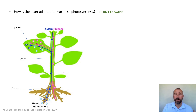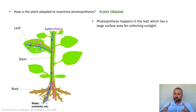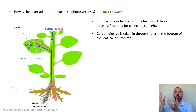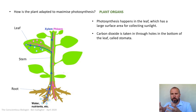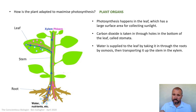Each of these three organs has a vital role in photosynthesis. Looking at the leaf first: its shape is very large and flat, giving it a massive surface area to catch as much sunlight as possible. Carbon dioxide required for photosynthesis is taken in by the leaf through tiny holes underneath called stomata, and the oxygen produced also leaves through those. Water required for photosynthesis is brought into the plant through the roots by osmosis.